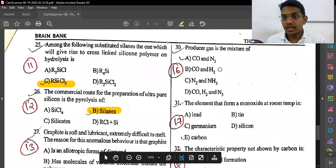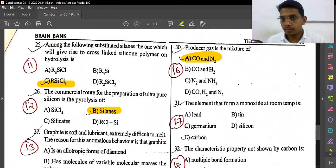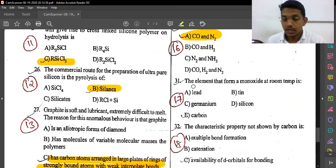Producer gas is the mixture of carbon monoxide plus nitrogen. Synthesis gas or syngas is carbon monoxide plus hydrogen. The element that forms monoxide at room temperature is option E, carbon.